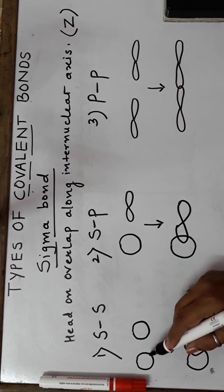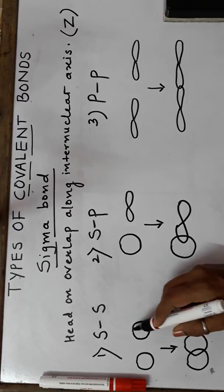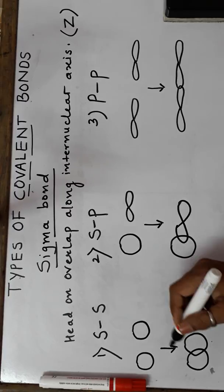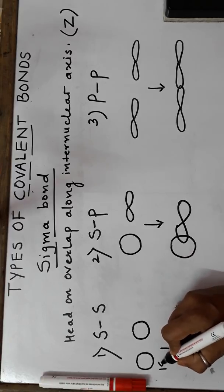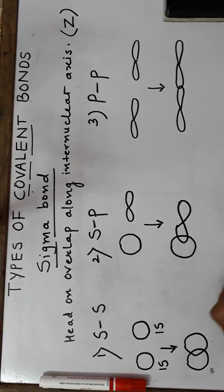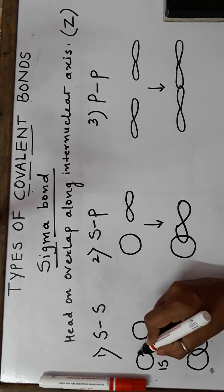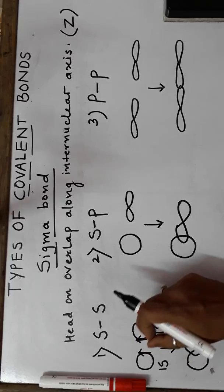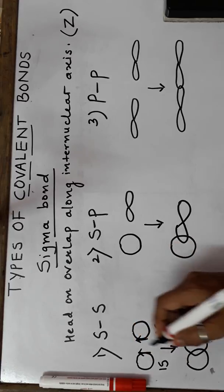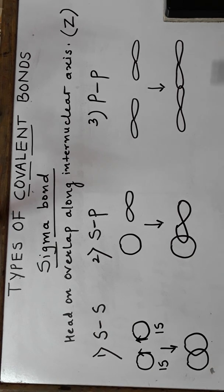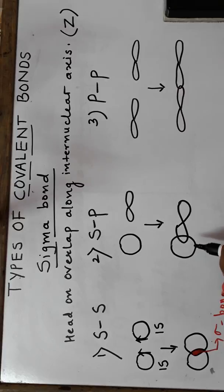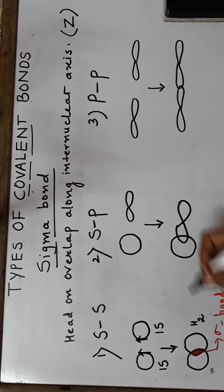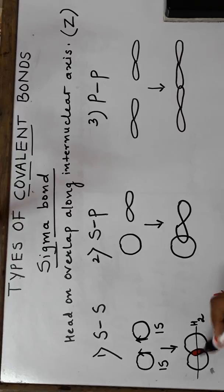We have two s orbitals — everyone knows they are spherically symmetrical, they don't have any directional character, the electron density is distributed evenly around. If two such s orbitals overlap — for example, hydrogen atom brings its 1s orbital and another hydrogen also brings its 1s orbital — each 1s orbital has got an unpaired electron. When both these orbitals overlap, the electron density gets concentrated along the internuclear axis in this overlap zone, which is called a sigma bond. The hydrogen atoms have changed to a hydrogen molecule — this is a very strong bond, and even if we rotate this bond it is not going to break.